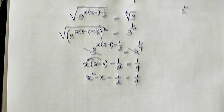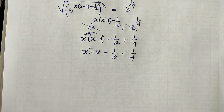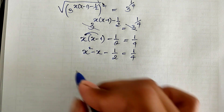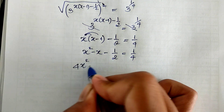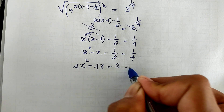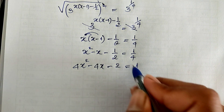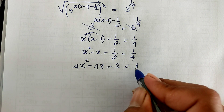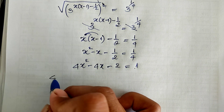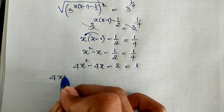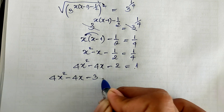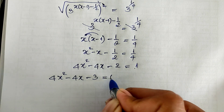Now I multiply both sides of this equation by 4. So we get 4h squared minus 4h minus 2 equals 1. Moving the 1 from the right-hand side to the left-hand side, we get 4h squared minus 4h minus 3 equals 0.